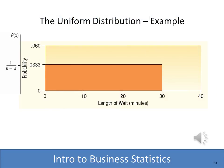Here we have an example of a uniform distribution showing wait times — specifically the wait times for students waiting for a bus. That wait time can be between 0 and 30 minutes. If we're looking at the probability, the way we compute it is 1 divided by B minus A. So 30 minus 0 is 30, and 1 divided by 30 is 0.333.